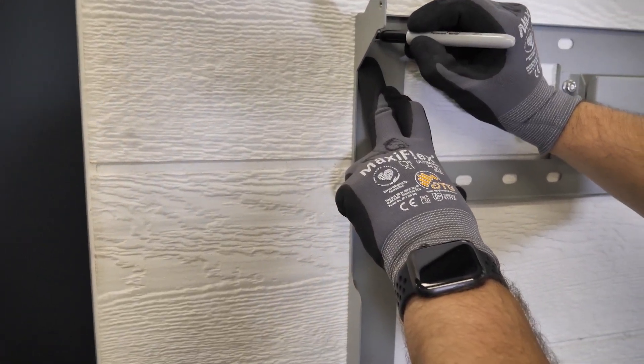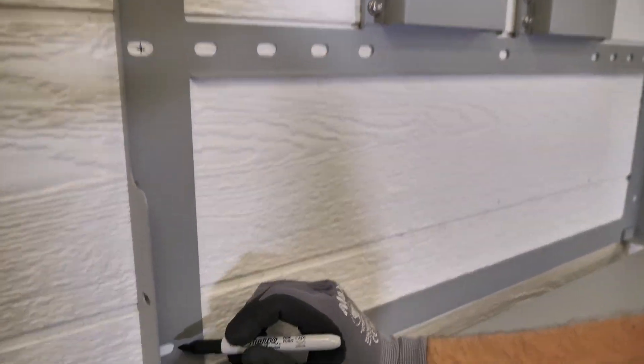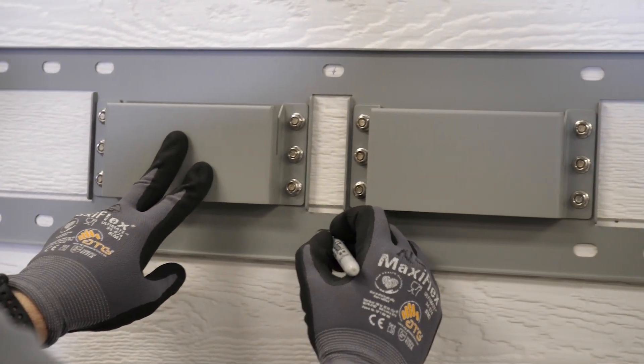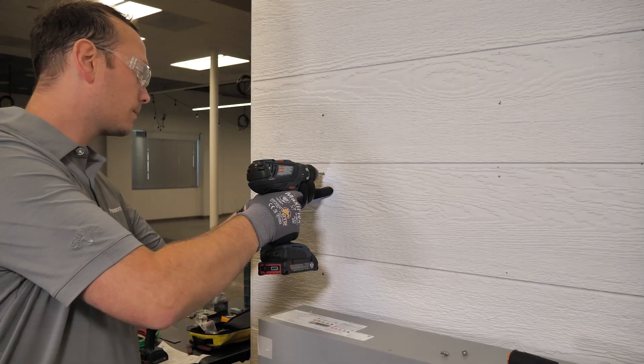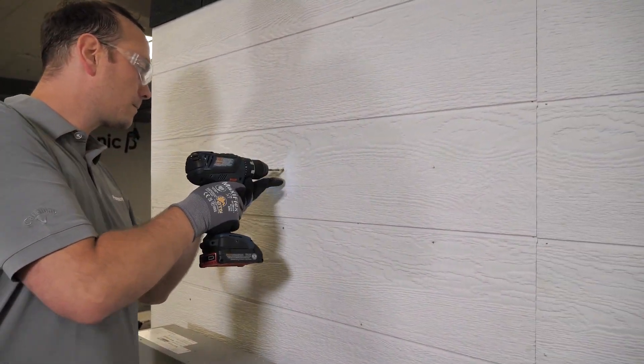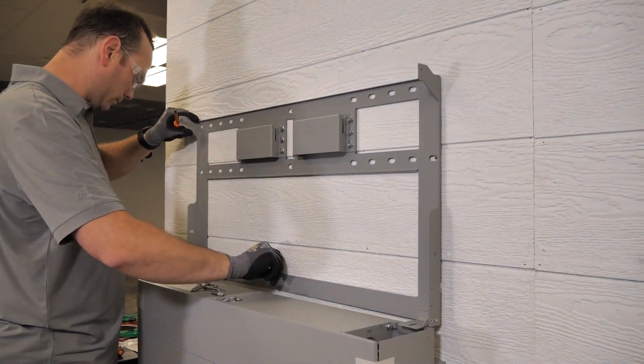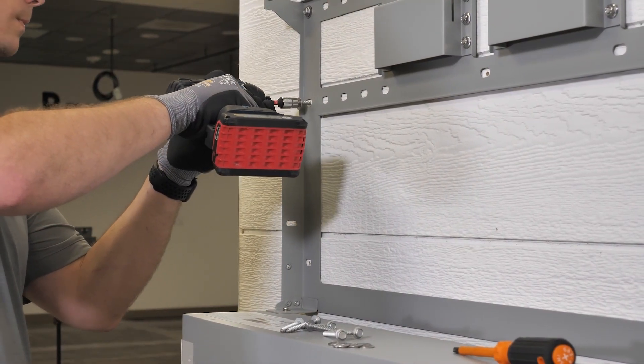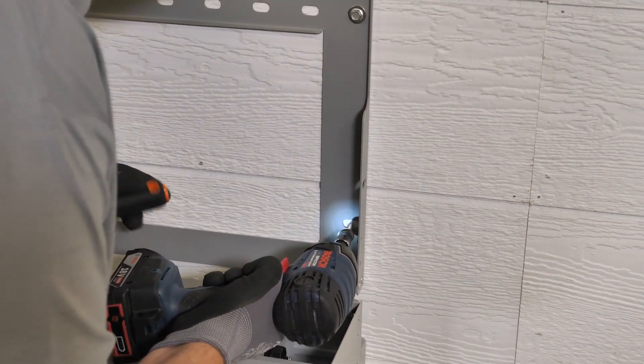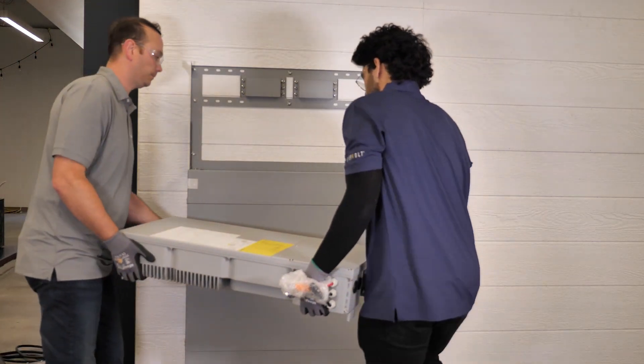Mark your holes on your studs for the inverter mounting bracket. Remove the bracket and drill. Replace the bracket and fix with lag bolts. Grab your inverter and mount it on the bracket.